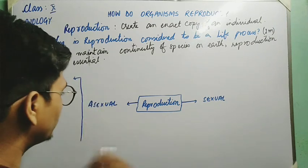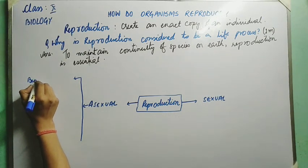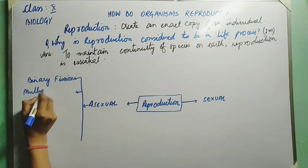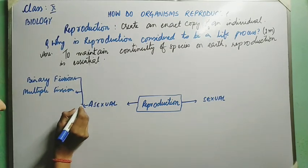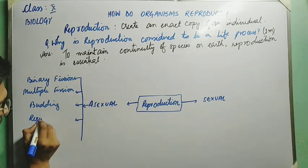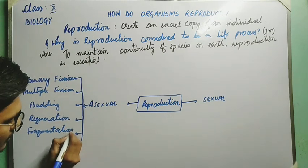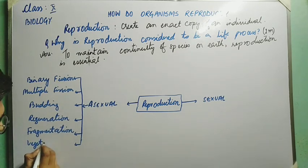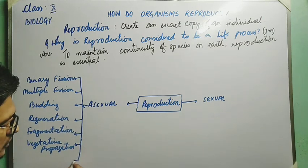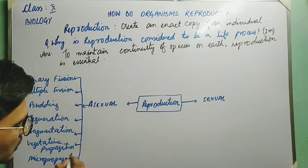In asexual reproduction, we will study different methods: binary fission, multiple fission, budding, regeneration, fragmentation, vegetative propagation, and tissue culture — also known as micropropagation.